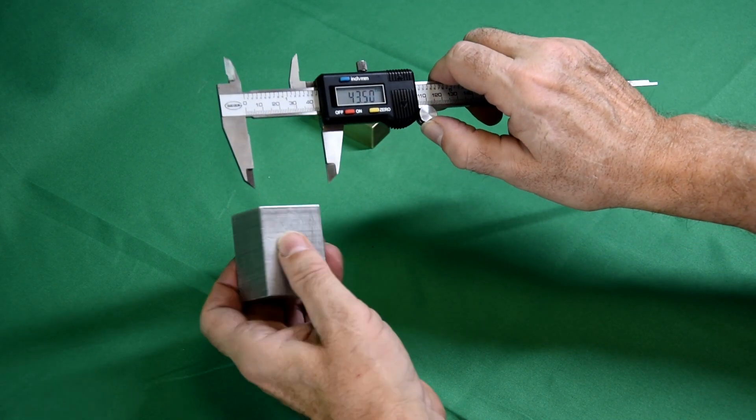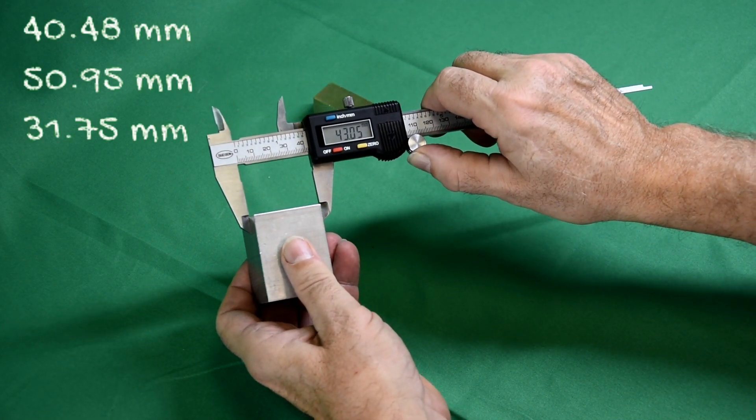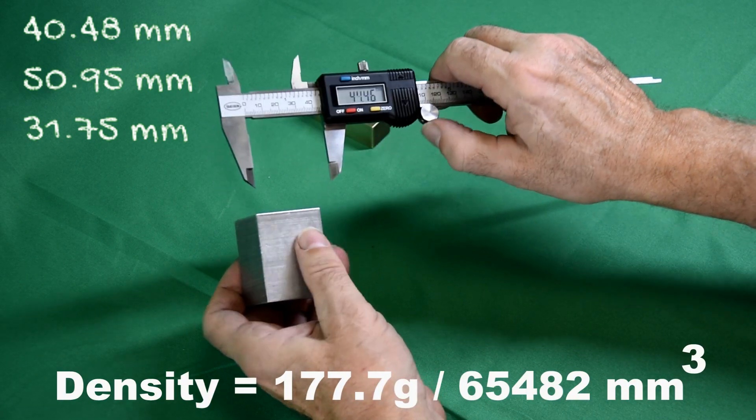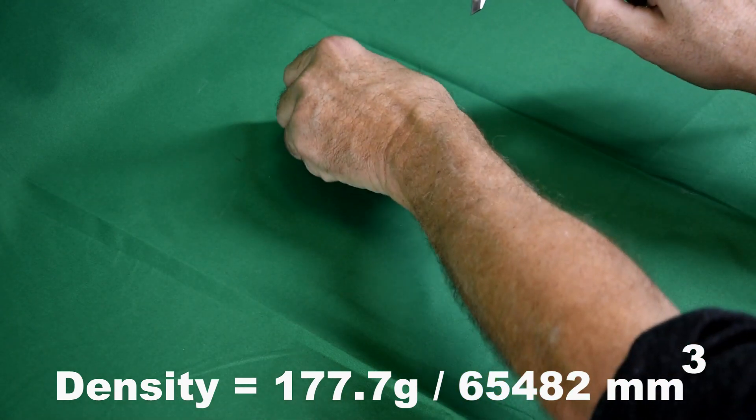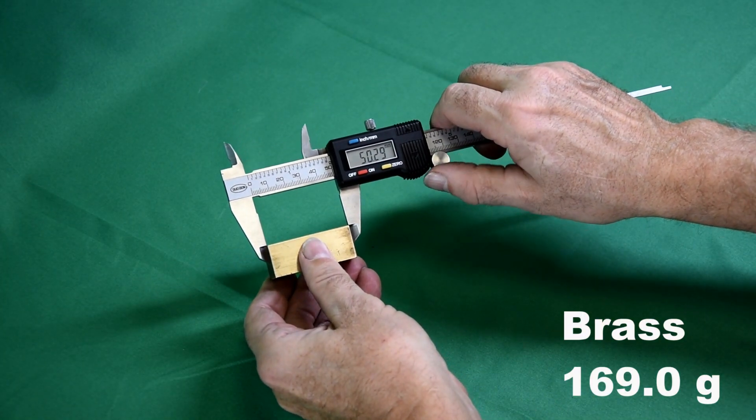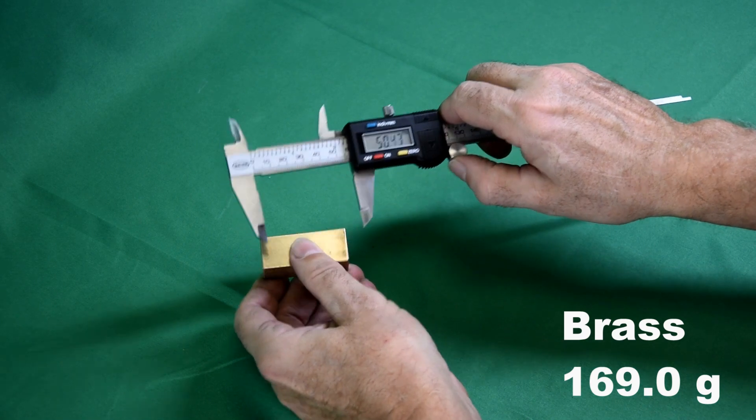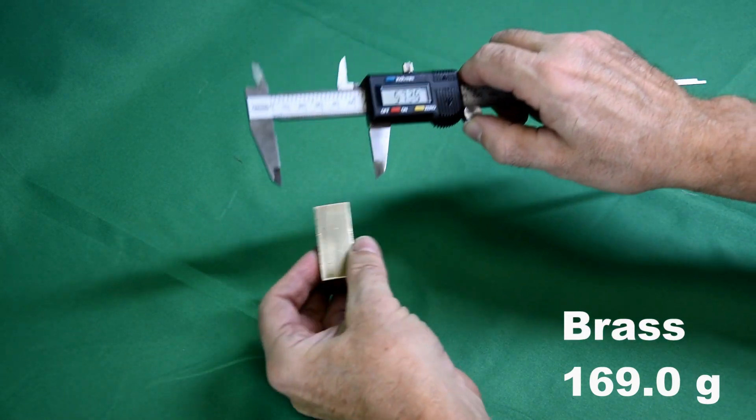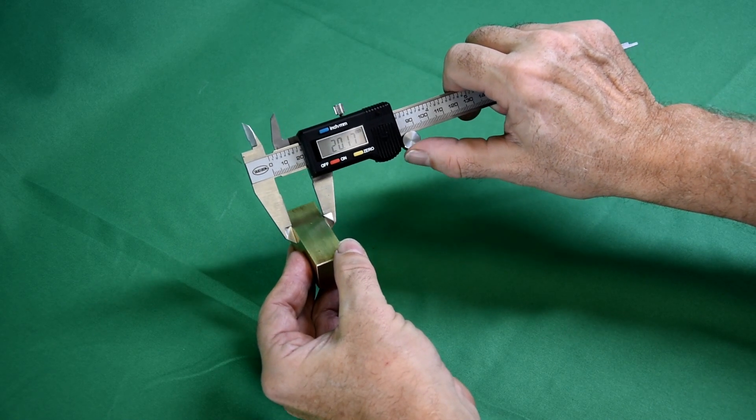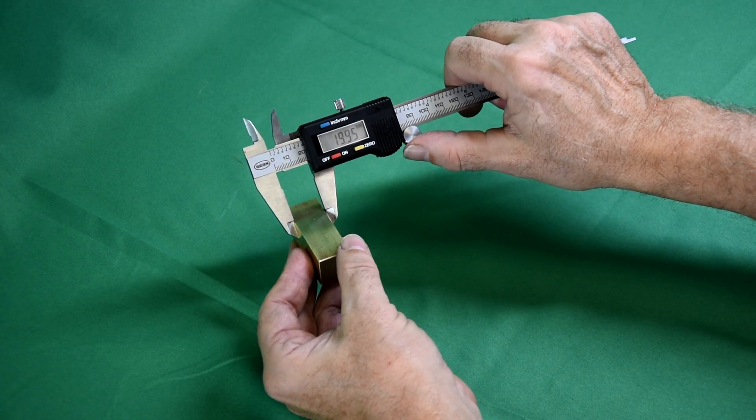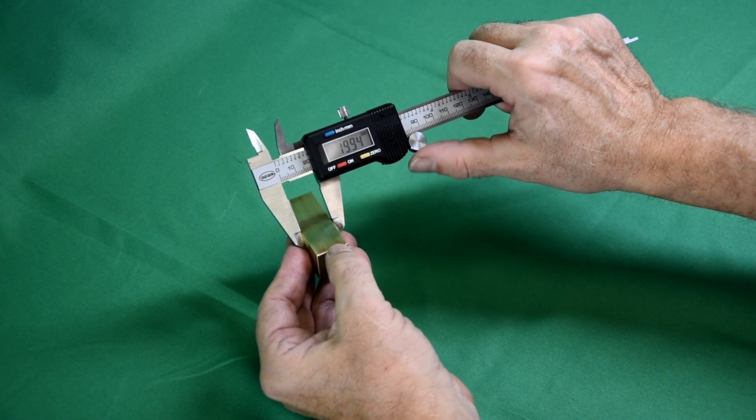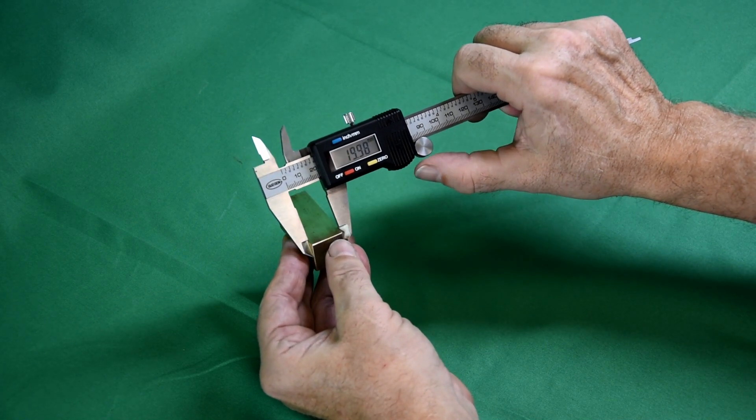Now, these are the dimensions for the aluminium block. I am measuring the dimension in three separate places to get an average for the width of the brass. This is time consuming but improves the accuracy again.